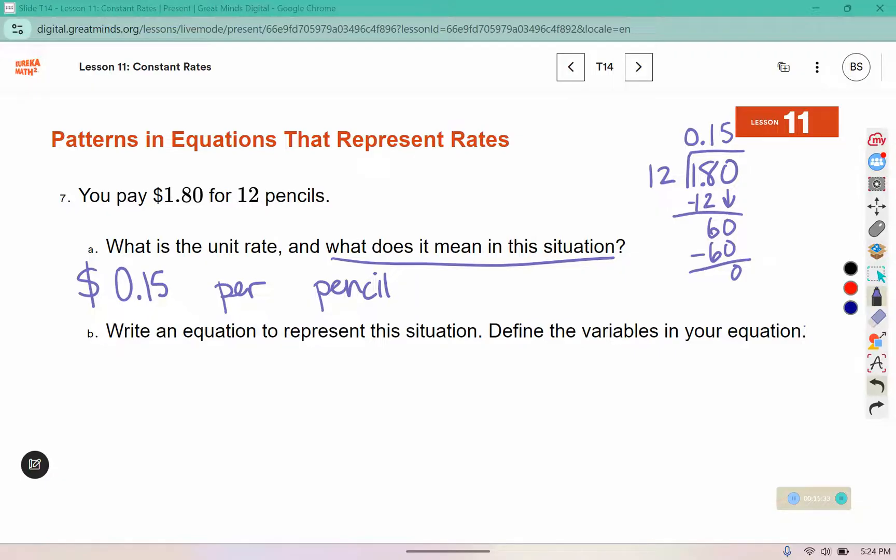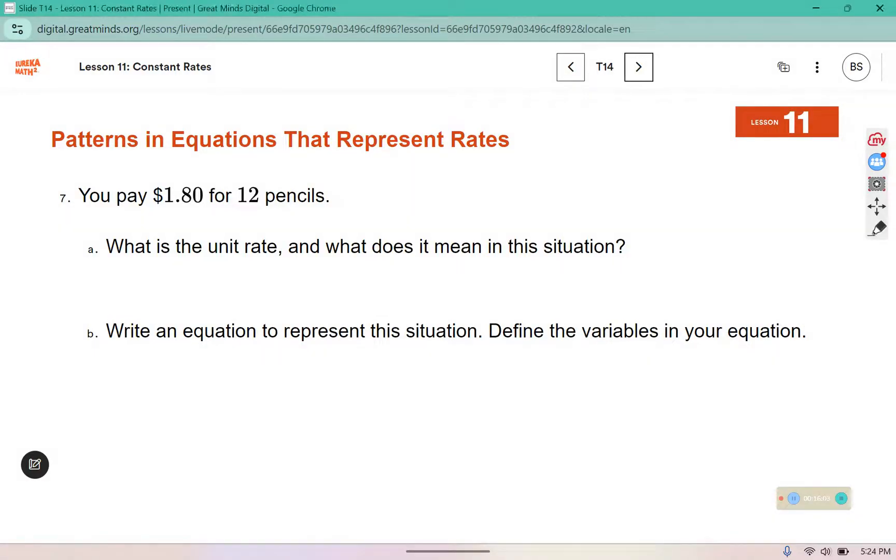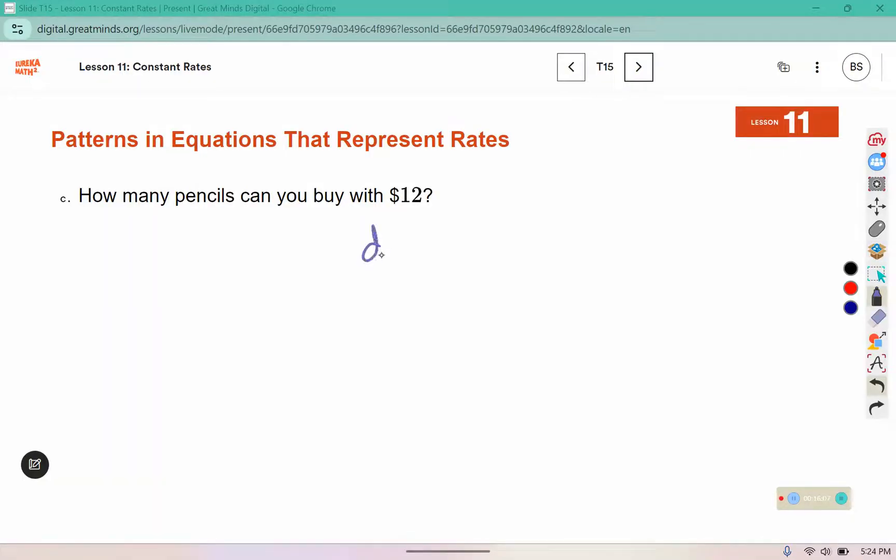Write an equation. Define the variables. I might use D for dollars, or M for money, and P for the pencils. If it's 15 cents per pencil, then we should have 0.15 times P, and that will tell us how many dollars we will spend.